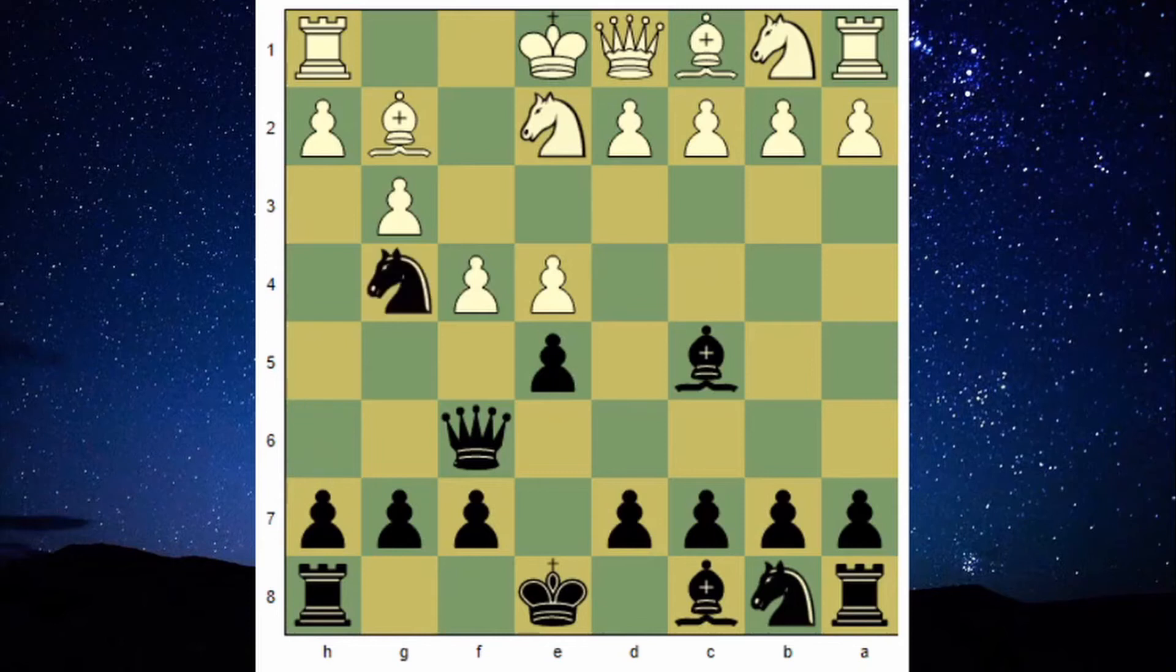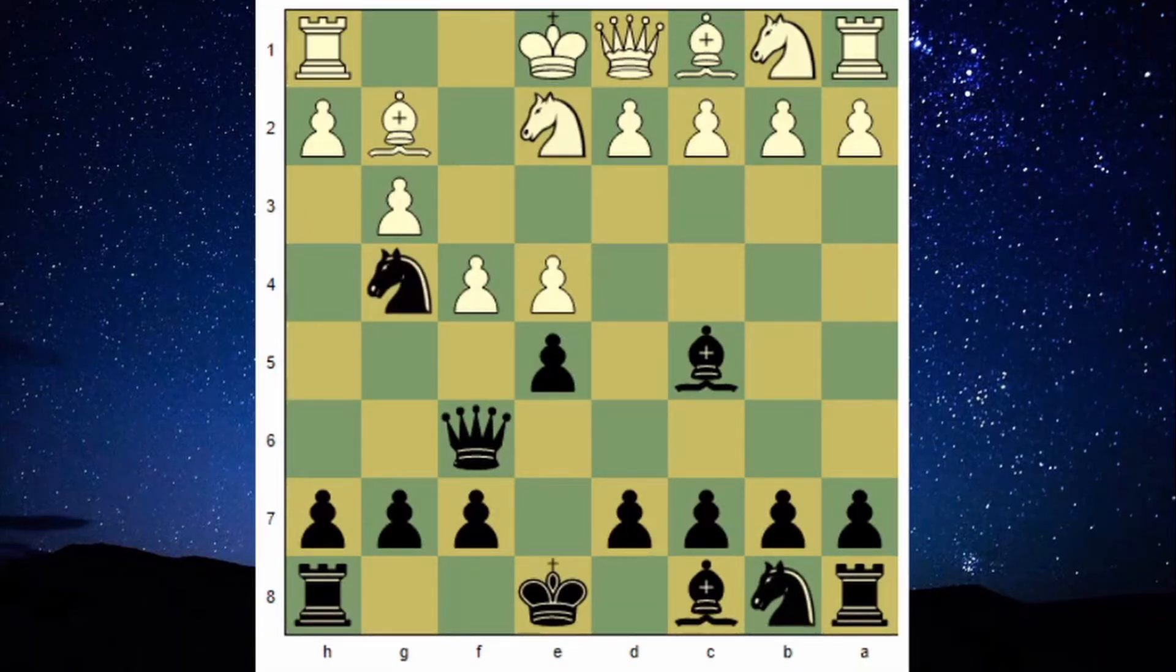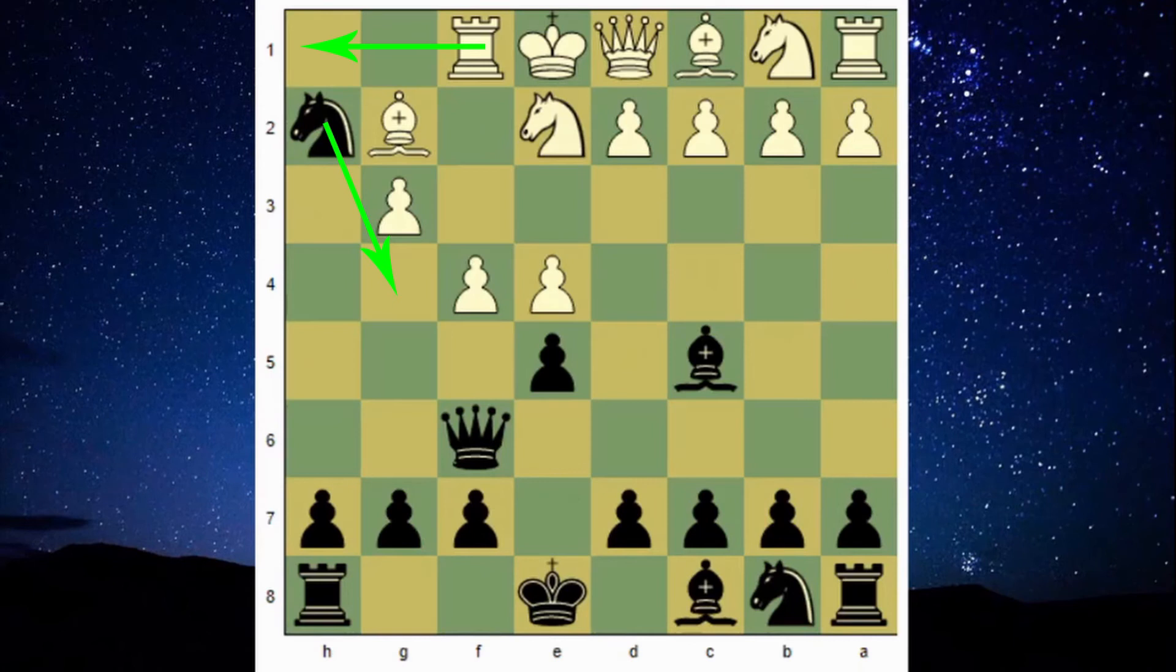Then we have to play knight to g4 threatening fork on f2. Thus rook to f1 controlling the f2 square. Then knight takes h2 grabbing the extra pawn and attacking the rook at the same time. In this position repetitive moves can be played like rook back to h1, knight to g4.